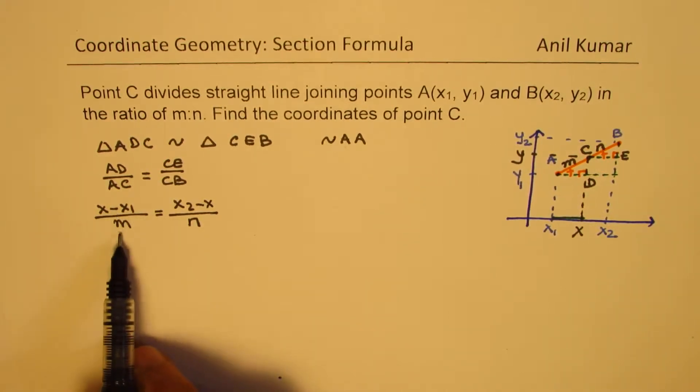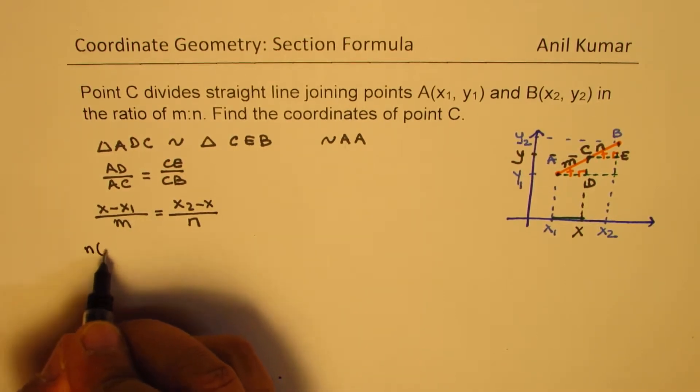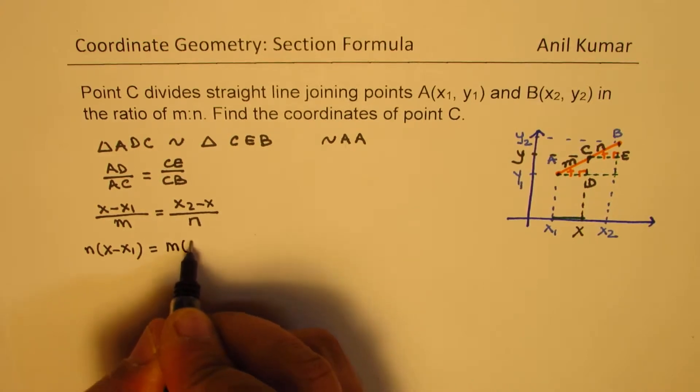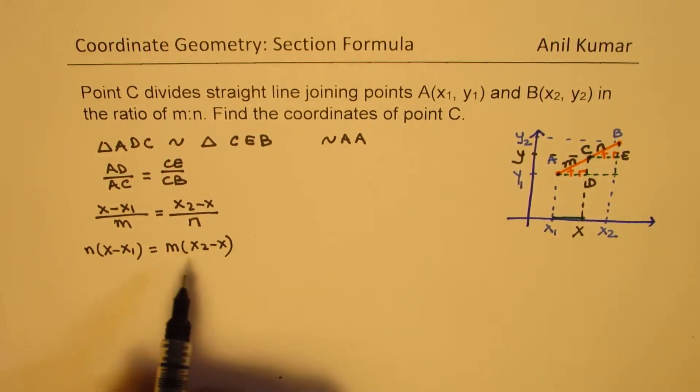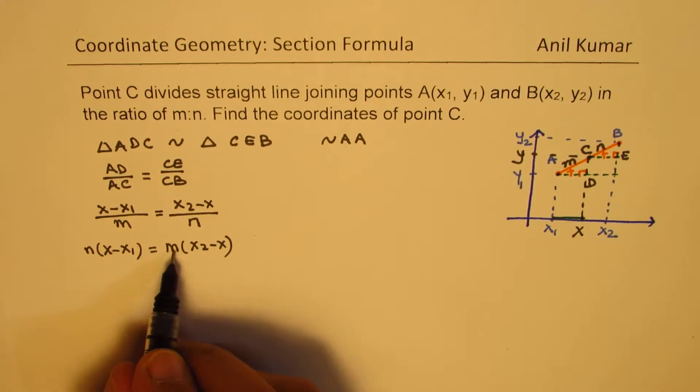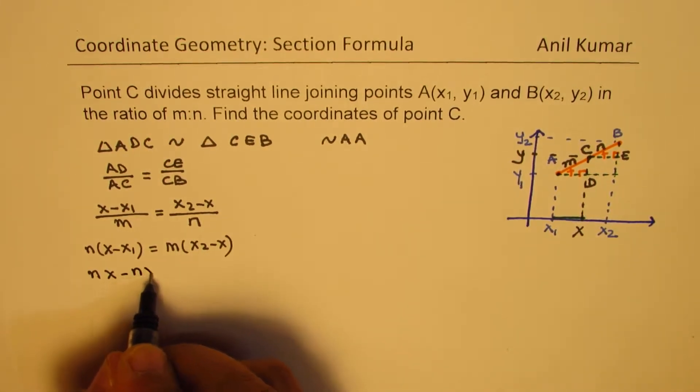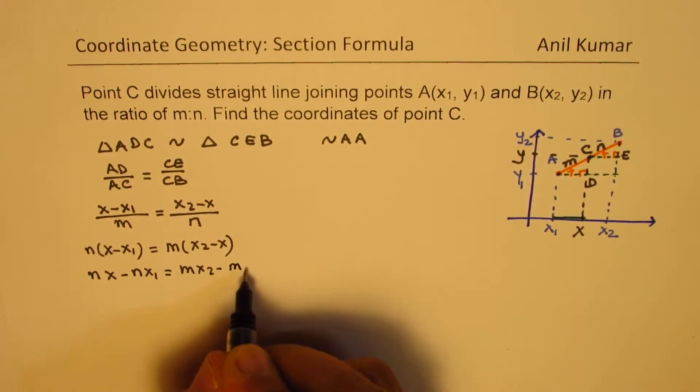Now we can cross multiply and isolate x. So if I cross multiply, I get n times (x minus x1) equals to m times (x2 minus x). Now bringing x terms together, we get, I'm taking mx, so let's expand this once again, mx2 minus mx.